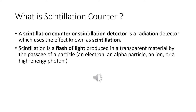What is scintillation? It is a flash of light produced in a transparent material by the passage of particles — such as electrons, alpha particles, and high energy photons. This light-producing phenomenon is scintillation. If you are making a device for the detection of radiation, then such detection counters are called scintillation counters.